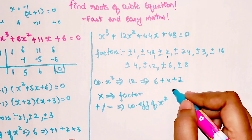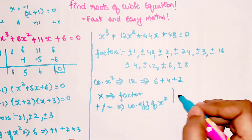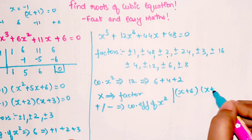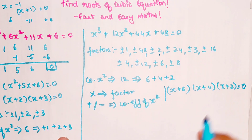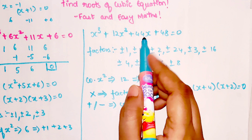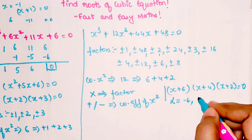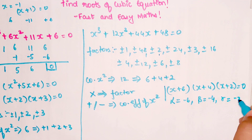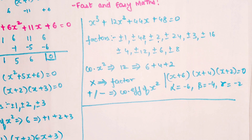The factorized form is (x+6)(x+4)(x+2) = 0. The roots are: alpha = minus 6, beta = minus 4, and gamma = minus 2.